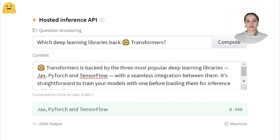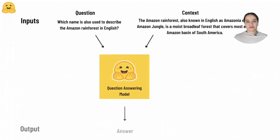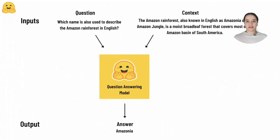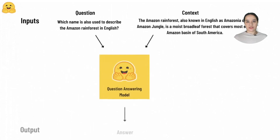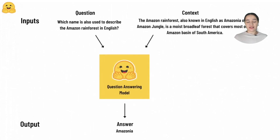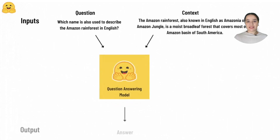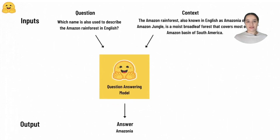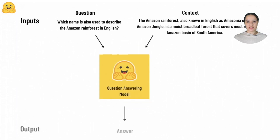Question answering is the task of extracting an answer in a given document. Question answering models take a context, which is the document you want to search in, and the question, and return an answer. Note that the answer is not generated but extracted from the context. This type of question answering is called extractive.